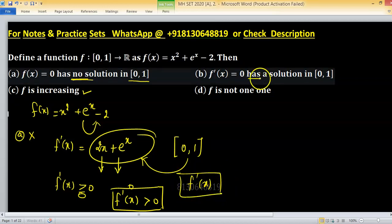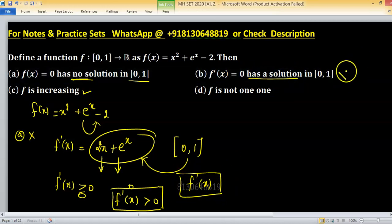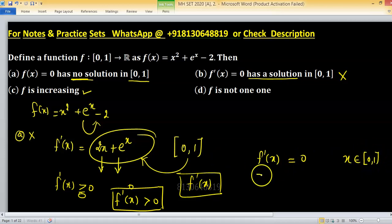But it says has a solution, so wrong. Because f'(x) can never be 0 when we take a positive x which belongs to [0,1]. Because f'(x) is 2x + e^x and after putting a positive value this can never be 0.